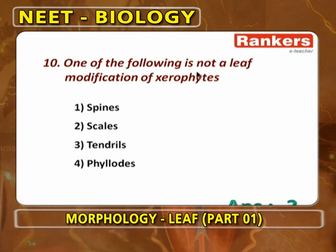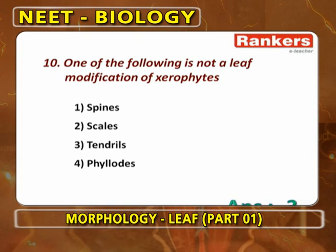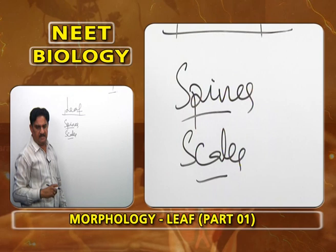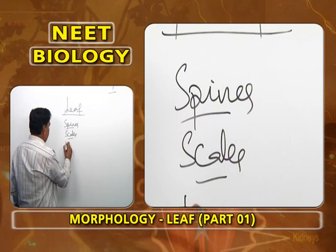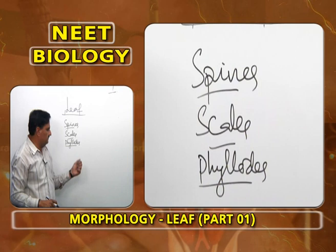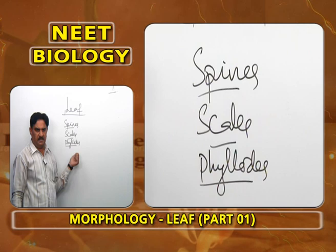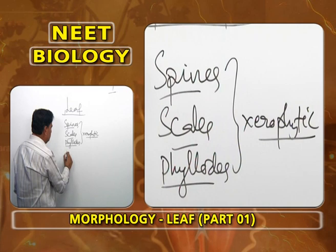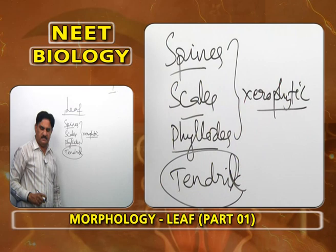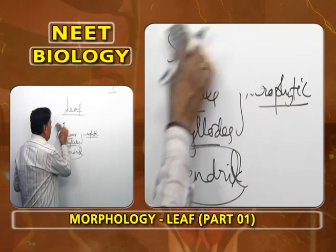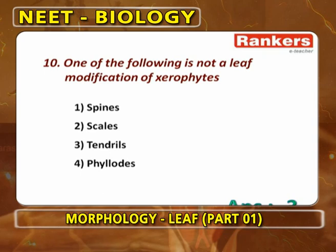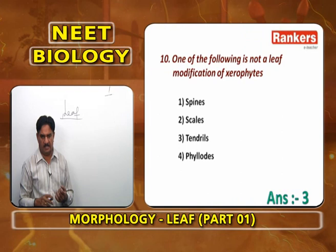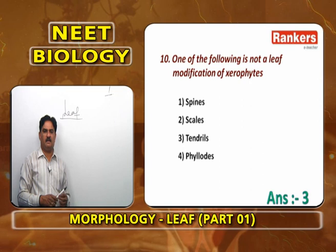One of the following is not a leaf modification of xerophytes. Spines and scales are leaf modifications that reduce transpiration; scales also protect apical and axillary buds. Phyllodes — any part of the leaf except leaf lamina modified into a green expanded photosynthetic structure — are also xerophytic adaptations. But tendrils are not xerophytic adaptations; tendrils help in climbing and can form from roots, leaves, or stem.